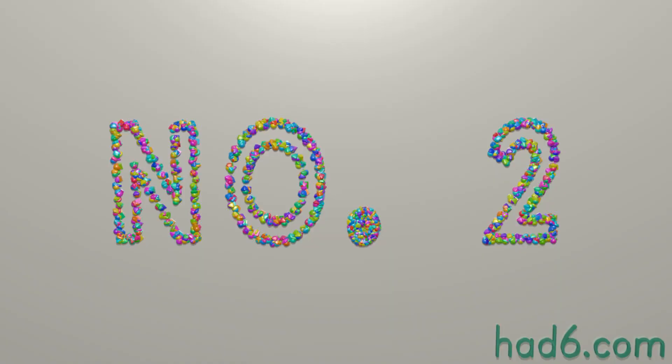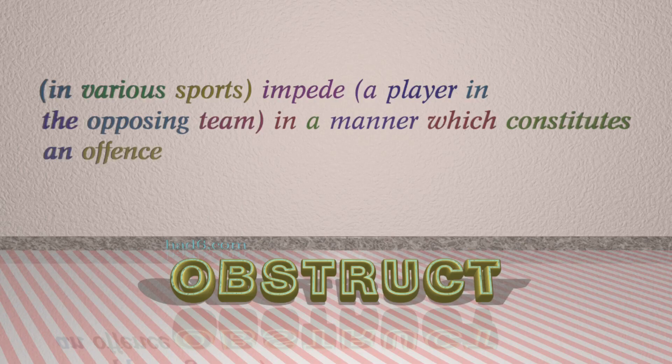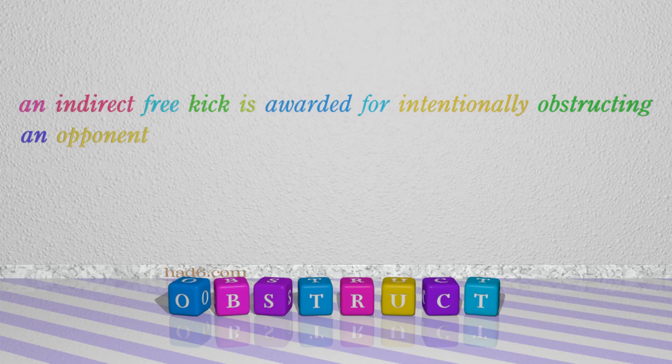Number 2: Obstruct, which means in various sports, impede a player in the opposing team in a manner which constitutes an offence. For example: an indirect free kick is awarded for intentionally obstructing an opponent.